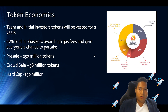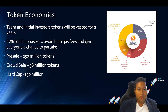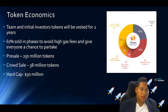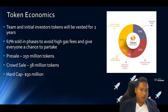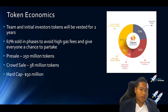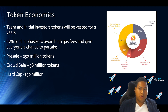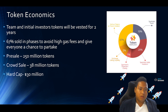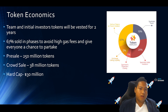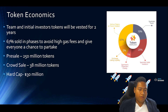Here you can see the token breakdown. The team and initial investors' tokens will be vested for 2 years — only after 2 years will tokens be made available to them. 67% of the tokens sold to token holders will be distributed in phases to avoid high gas fees and congestion, giving everyone a chance to participate. In the past, some ICOs have been hugely popular and not everyone was able to get in on time, with some getting ahead by paying higher gas fees, so this method makes it fairer for everyone. The pre-sale is 250 million tokens, the crowdsale is 38 million tokens, and they are raising a hard cap of 30 million.